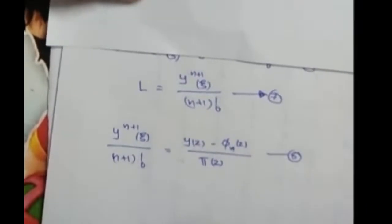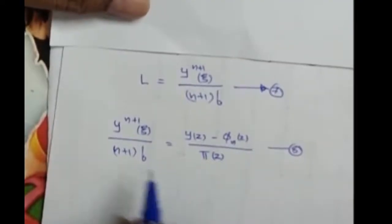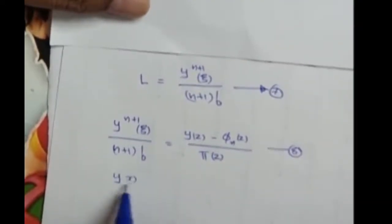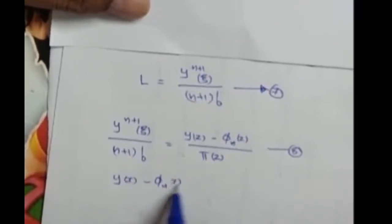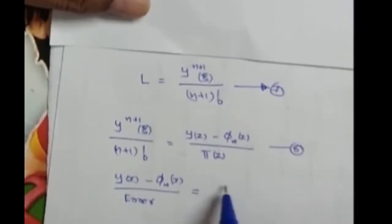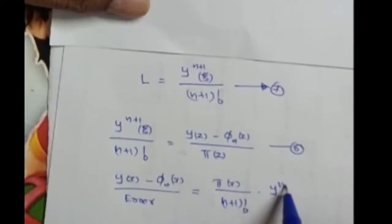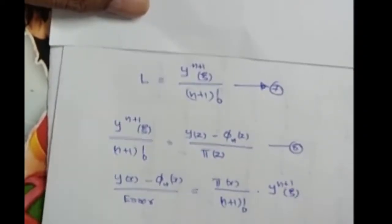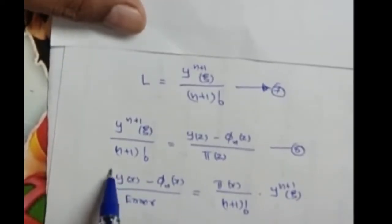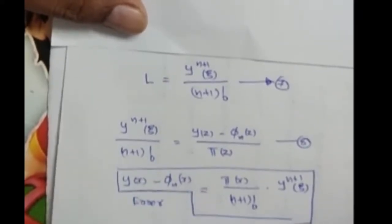Substituting equation 7 into equation 4 and rearranging, then replacing z by x, we obtain the error formula: y(x) − φₙ(x) = π(x) / (n+1)! · y⁽ⁿ⁺¹⁾(ζ). This is the error formula in polynomial interpolation.